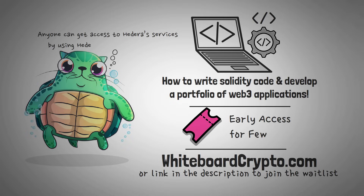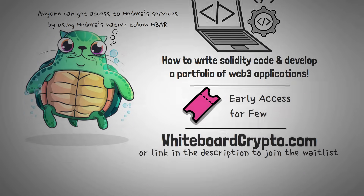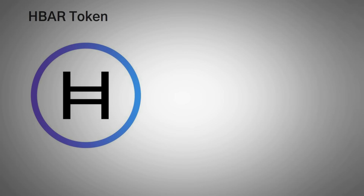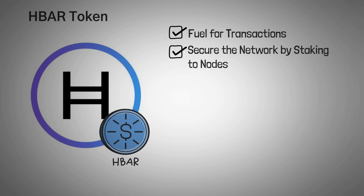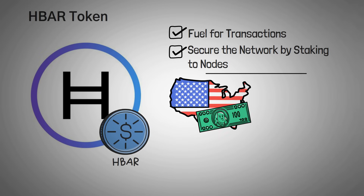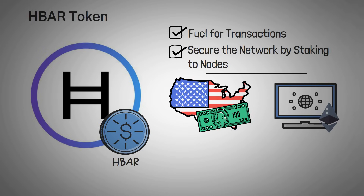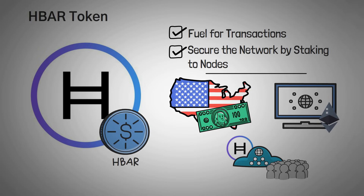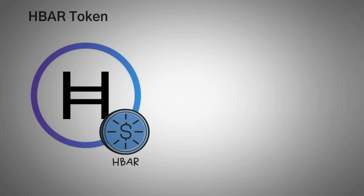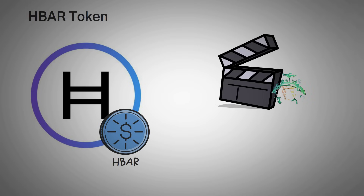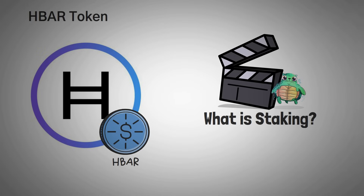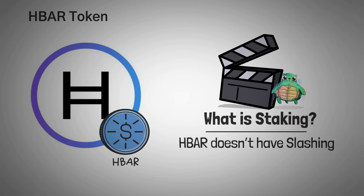Anyone can access Hedera's services using its native token, HBAR. HBAR is used for two things: as fuel for transactions and to secure the network by staking to nodes — similar to how Ethereum users need ETH to make transactions on Ethereum. HBAR is used by developers as well as regular users of apps and services on Hedera. Even though you can't host your own node, anyone can earn rewards by staking their HBAR. Rather than proof of work, HBAR uses a proof-of-stake consensus mechanism. One note: HBAR doesn't have slashing, meaning if there's a bad actor proven to be a bad staker, their tokens aren't slashed or taken away.